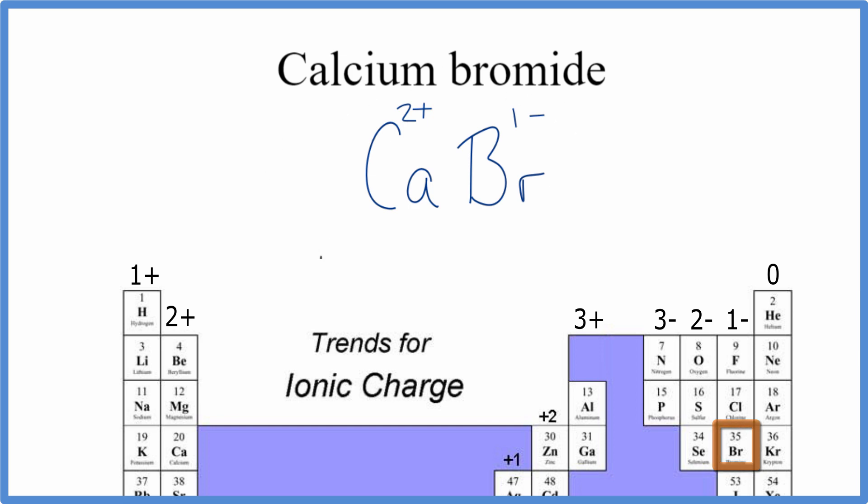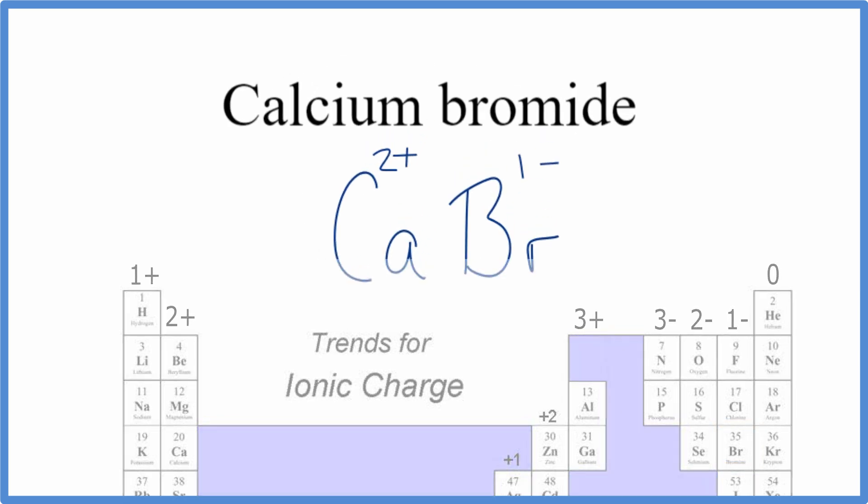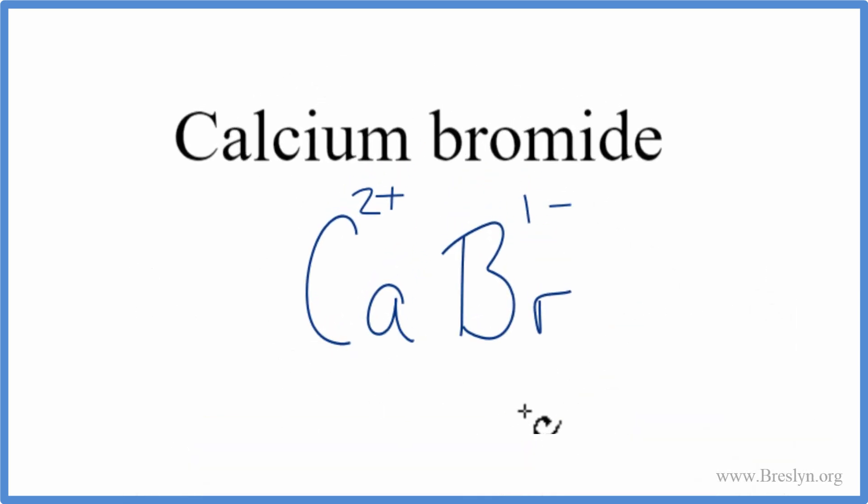So these charges, they need to add up to 0. We need to have a net charge of 0, and right now, that's not the case. What we can do is change the subscripts, these small numbers here, to make everything balance out. And there's an easy trick to help us do that.